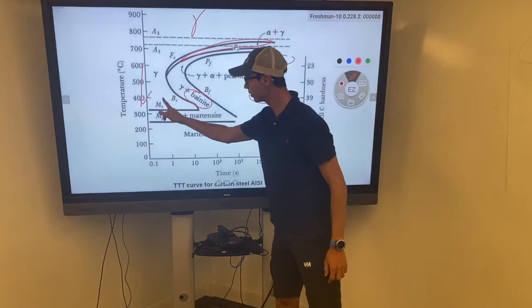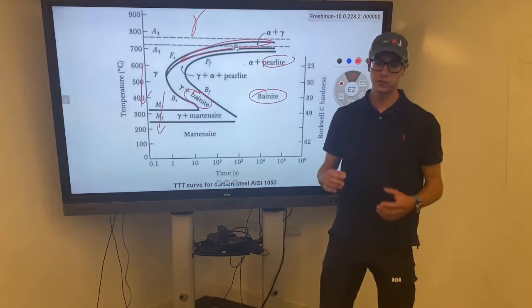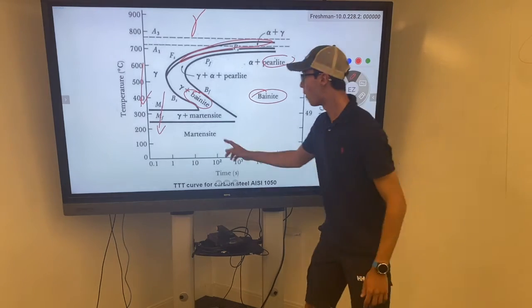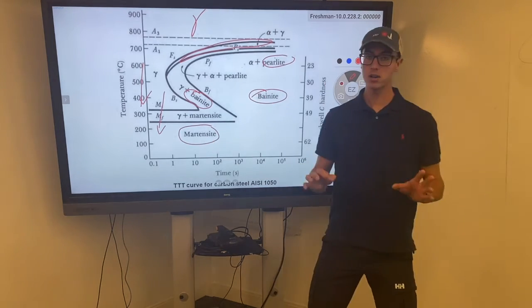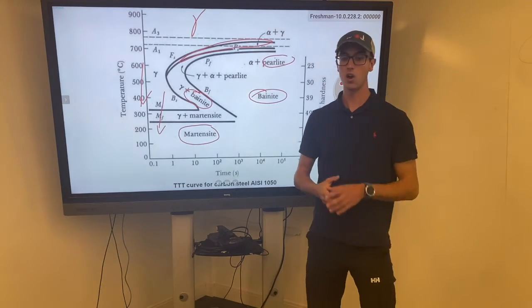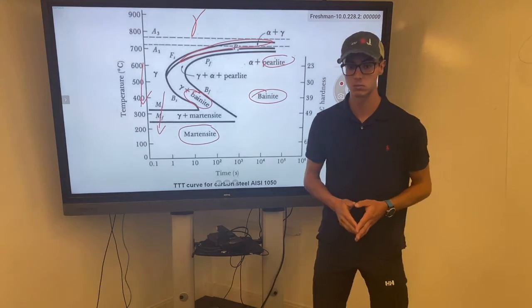Next, by cooling the steel even more, a diffusionless solid state transformation takes place which achieves martensite. Now martensite is important because martensite is extremely brittle and also is highly supersaturated with carbon atoms.